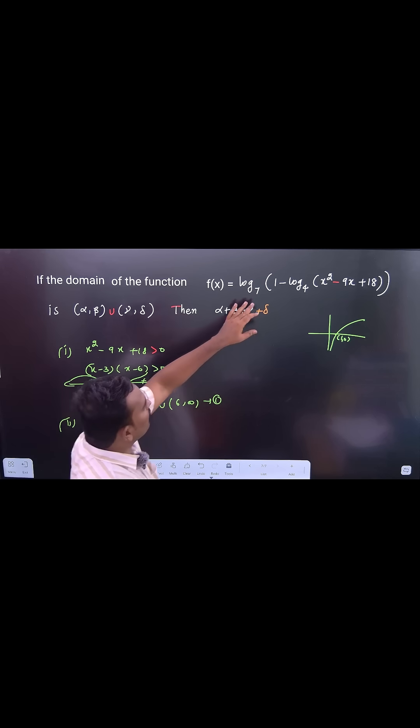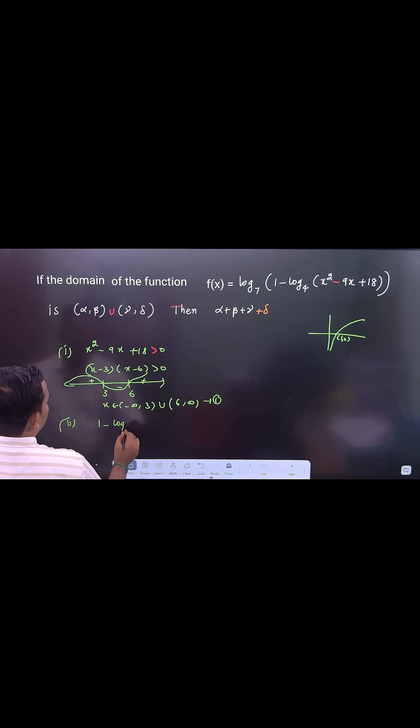Now input here is what? 1 - log base 4 (x² - 9x + 18) is greater than 0. You can solve this: 1 is greater than log base 4 (x² - 9x + 18).